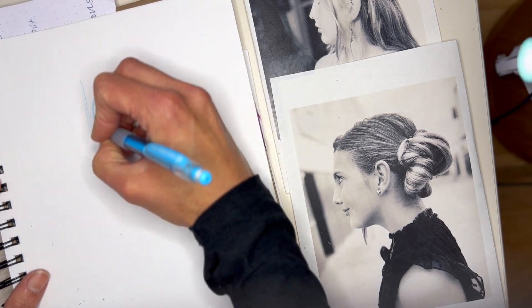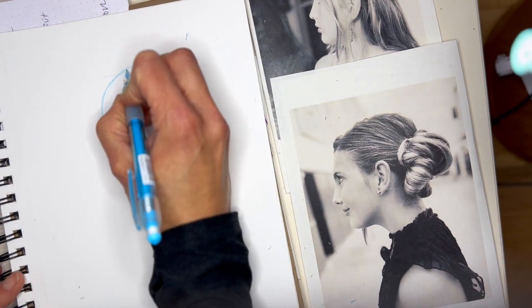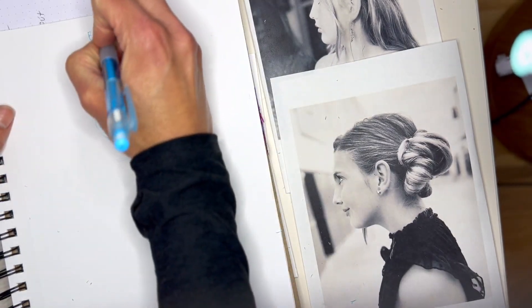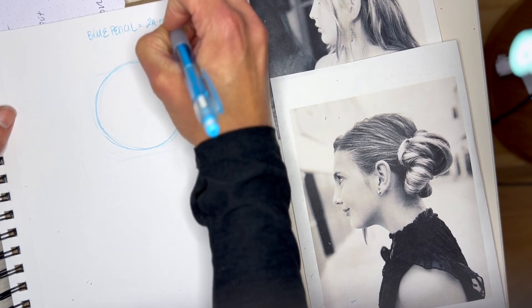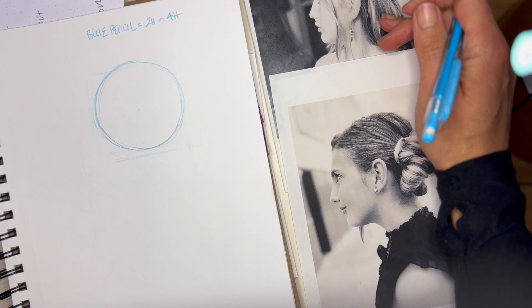Now that I have my circle, my blue pencil is going to stand in here for my 2H or 4H pencil. I'm drawing with blue so that you can see what I'm doing.